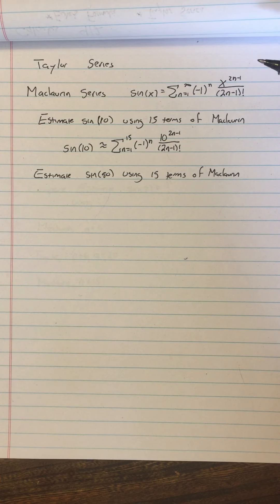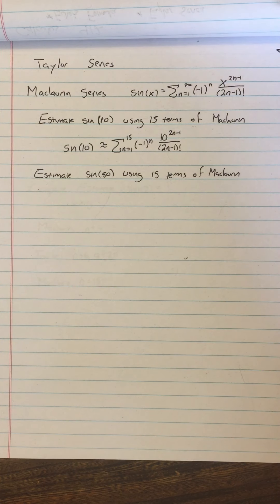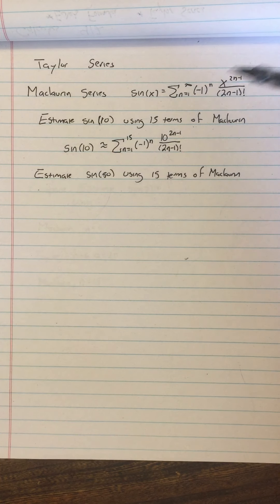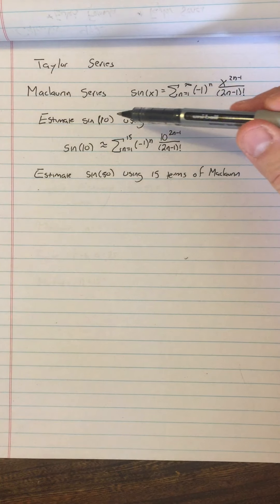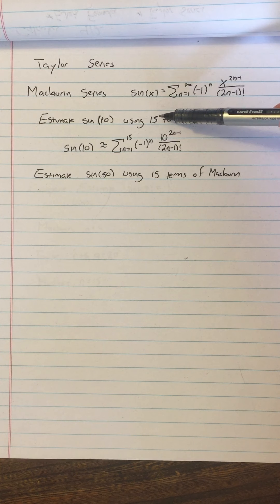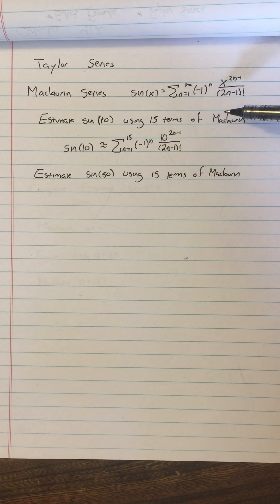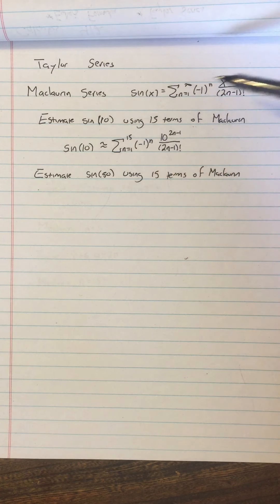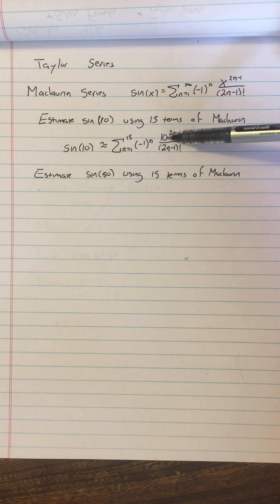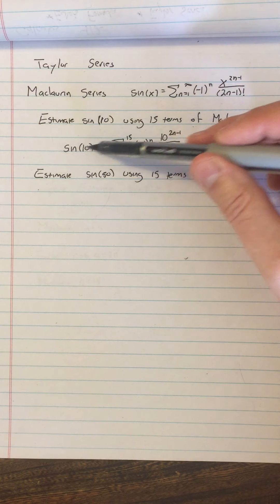If you don't have infinitely many terms, sometimes it's a pretty good estimate and sometimes it's not. So practically speaking, we never have infinitely many terms because we ain't got that much time, even with school closed. So we're going to use a certain finite number of terms. If we estimate sine of 10 using 15 terms of the Maclaurin series, that means the x here is going to be 10. We're saying sine of 10 equals that.